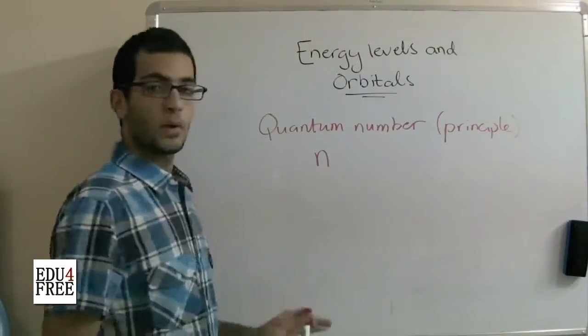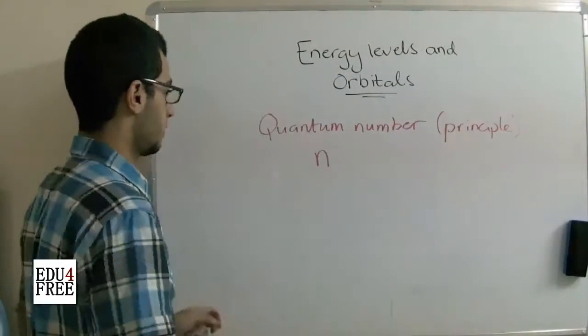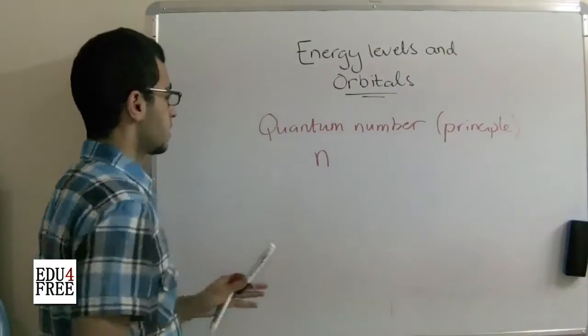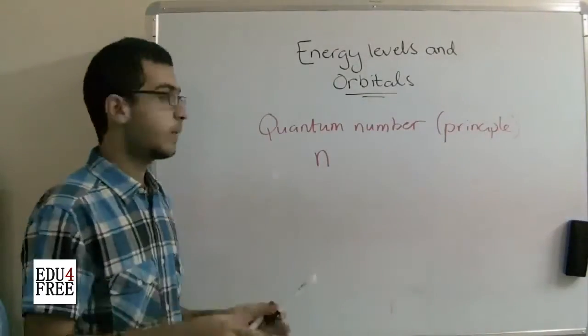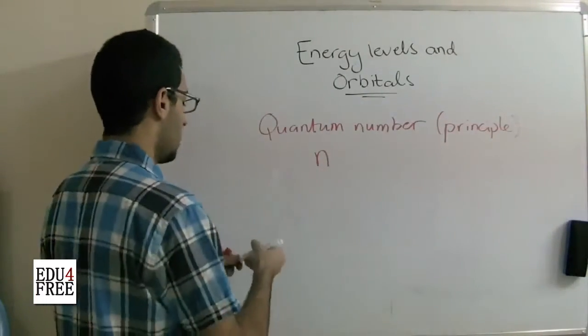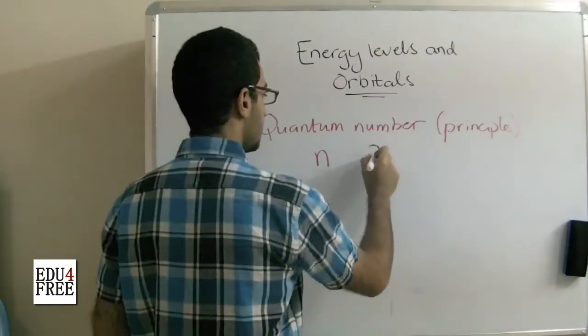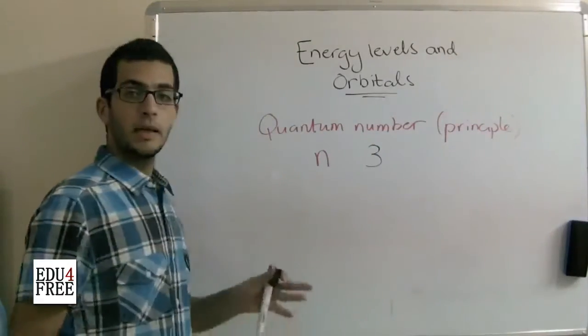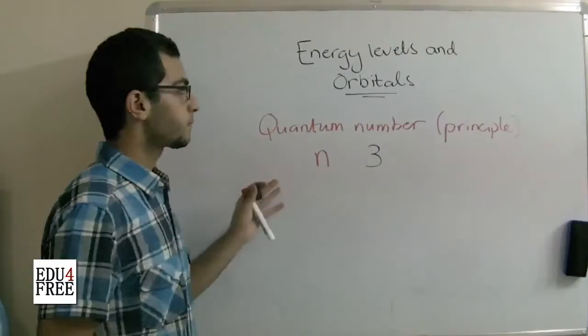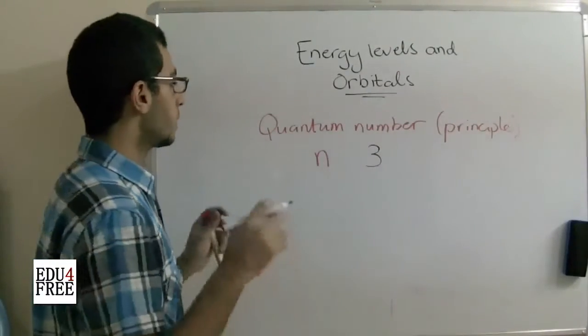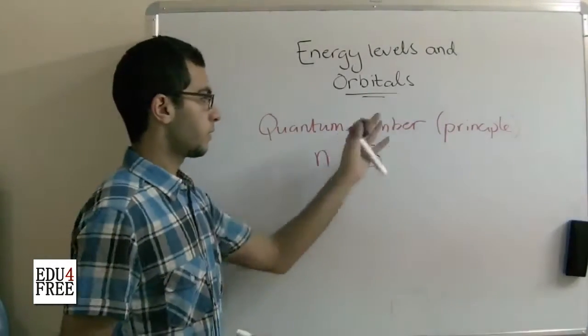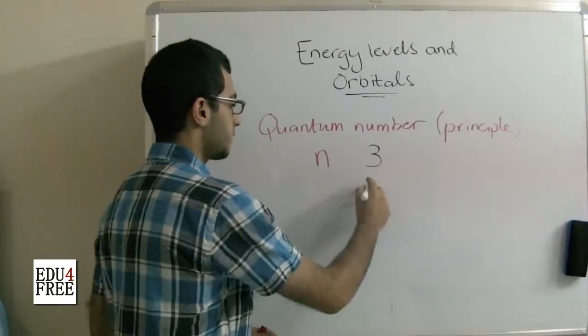So the number of energy levels inside an atom equals this n. So if I say that an atom has a principal quantum number of 3, this means that the main energy levels in this atom is 3. And we also said that the maximum value for the principal quantum number is 7.